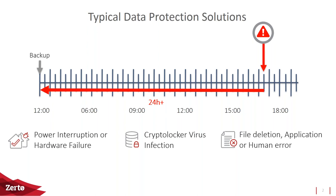Human error deletion, cryptolocker infections, virus infections, and application crashes — whether that's a full server or a single application — are all concerns. Understanding all the aspects of where you want to protect is critical because in many cases disaster recovery is an afterthought for corporations. They're using nightly backups, which is fine, but a backup solution isn't true DR. If your infection happened and you roll back to backups from last night, you have a data loss of up to 24 hours.